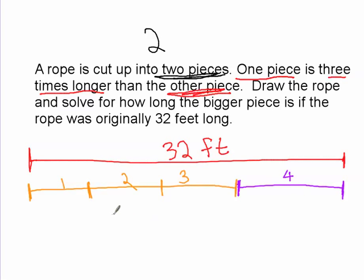So we basically have four pieces. So we have to divide the 32 into four pieces. 32 divided by four is eight feet, right?